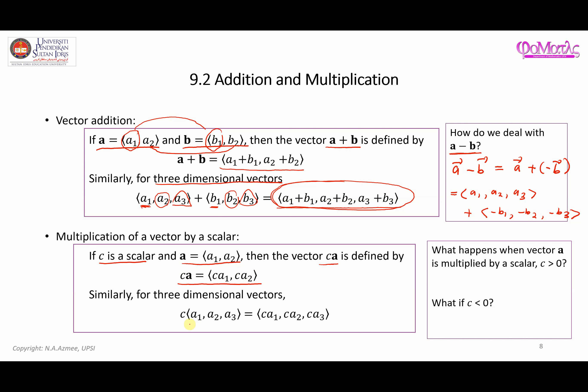If you have a three-dimensional vector, you follow the same pattern with an additional component a3, so you multiply a3 with the scalar c as well.